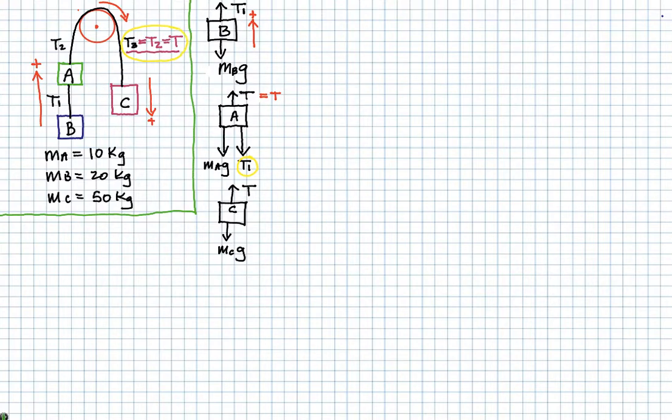Okay, now object C, we have its weight pulling down. So that's MCG. And the upward force is going to be tension T. Now the reason tension T2 is equal to tension T3 and therefore equal just to T is because you have the same string connecting A and C. It's one string. So the tension is always going to be the same throughout in a single string.